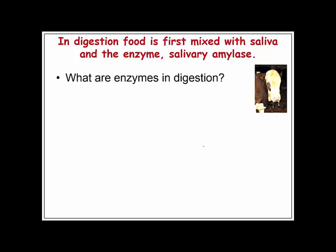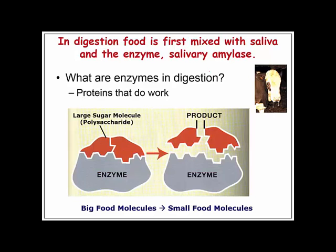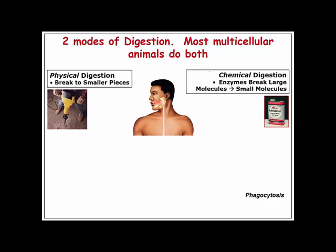In digestion, food is first mixed with saliva, which contains the enzyme salivary amylase. Enzymes are the proteins that do the work of digestion — they actually break things apart. Without enzymes, the reactions would not occur. When you have a polymer made up of many sugar monomers, you need an enzyme to break it down. There are two modes: physical breakdown — like a jackhammer — and chemical digestion using enzymes, acids, and other agents.